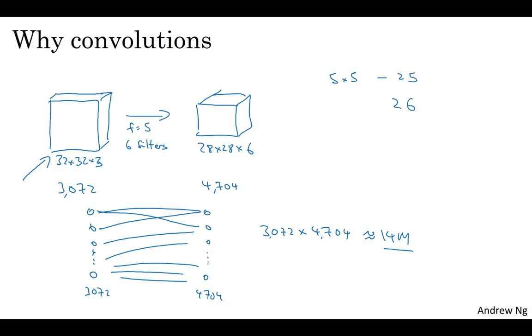plus a bias parameter, it means you have 26 parameters per filter, and you have six filters. So, the total number of parameters is that, which is equal to 156 parameters. And so, the number of parameters in this conf layer remains quite small.